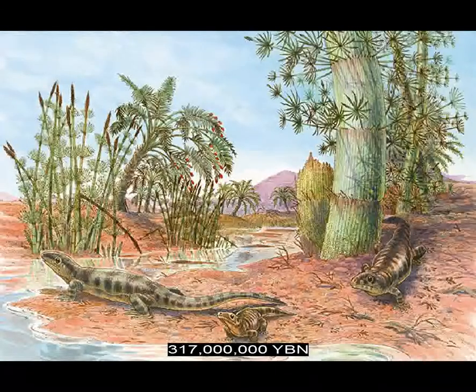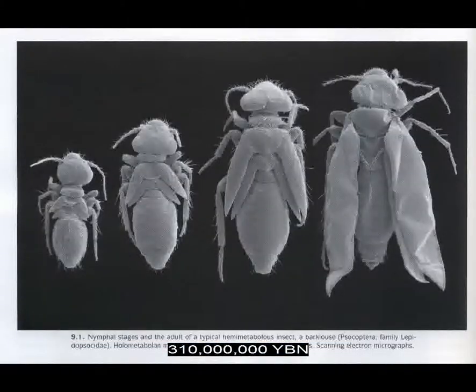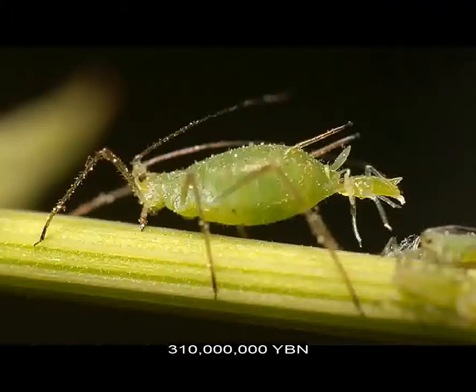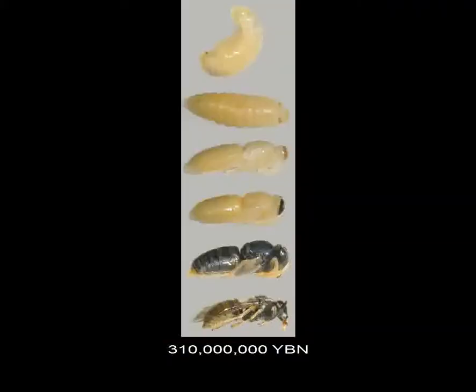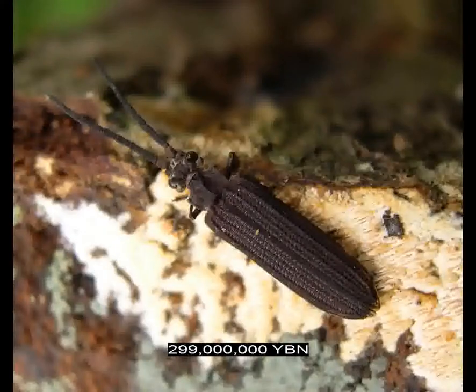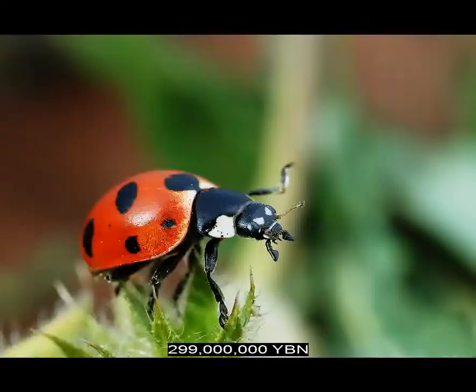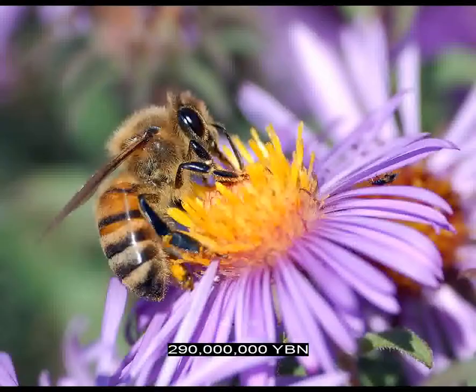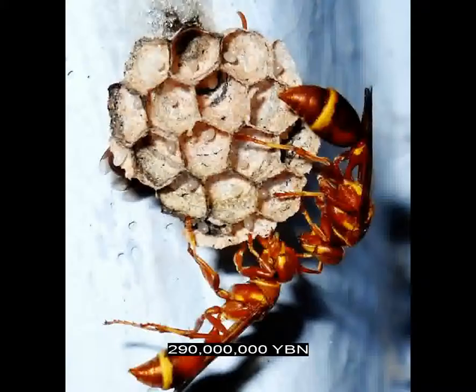Reptiles evolve. Insects Paraneoptera — lice, cicadas, aphids. Holometabolous insects — ancestor of beetles, bees, true flies, and butterflies. Complete metamorphosis. Amphibians, frogs. Insects Coleoptera — beetles. Insects Hymenoptera — bees, ants, wasps.